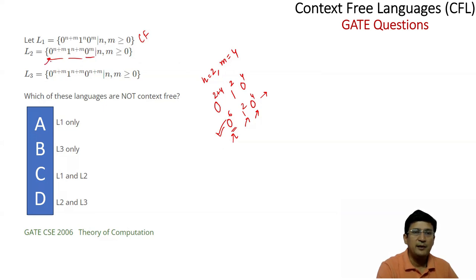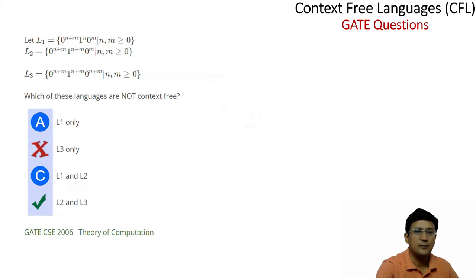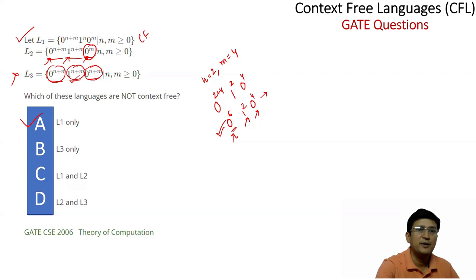For L2 = {0^(n+m) 1^(n+m) 0^n}, there is an n-m dependency with three comparisons required. Since context-free languages can only handle two-element comparisons simultaneously, three simultaneous comparisons are not possible in CFL. For L3 = {0^(n+m) 1^(n+m) 0^(n+m)}, all three sections must be equal — again three comparisons, so also not context-free. The question asked which are not context-free, so L2 and L3 are not context-free.